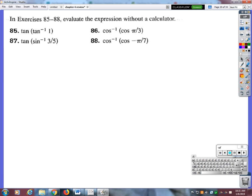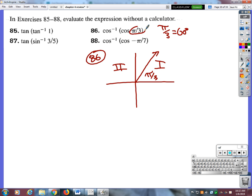86? Okay, 86. Find the inverse cosine of the cosine of π/3. All right, where is the inverse cosine used for? Good. Quadrant 1 and quadrant 2. Where is π/3 angle? Quadrant 1, π/3 is equal to 60 degrees. So that means that the answer is just π/3 because the inverse cosine and the cosine just cancel each other out and it's just π/3.